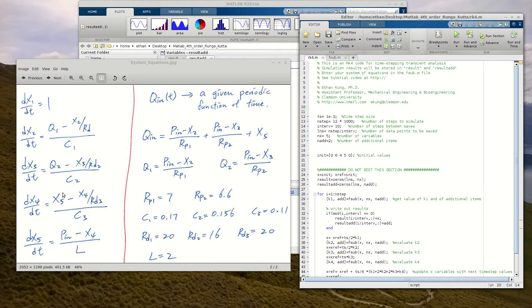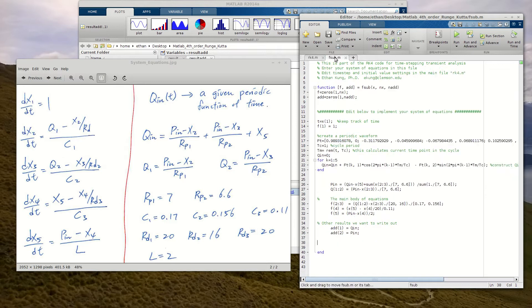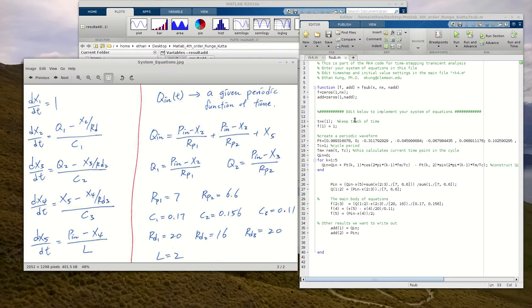And then, where you put in the actual equations, your system of equations, you put it in this fsub file here. There's just a few things you need to know about how this function works. The first thing is that you have access, you have direct access to all of your x variables. So x1 to x5, you can access their value at any time.